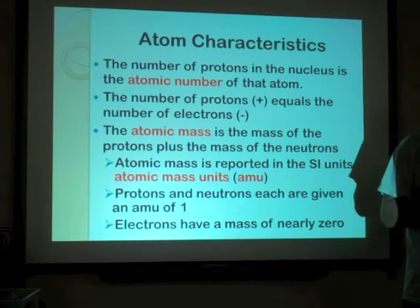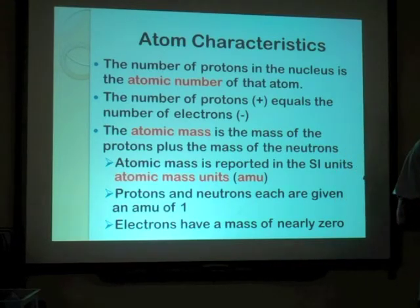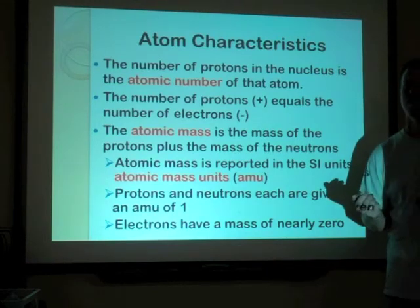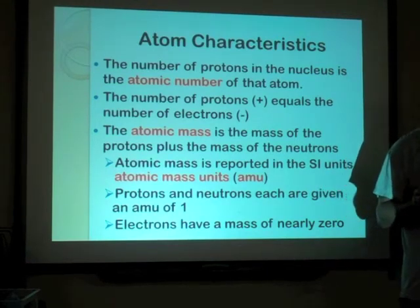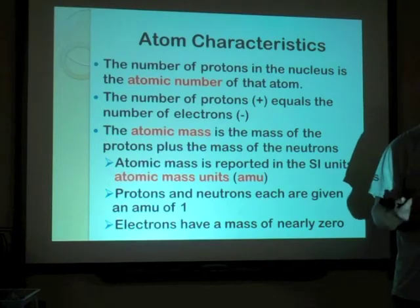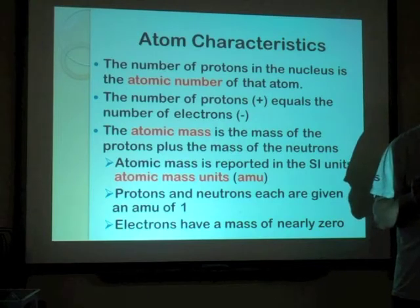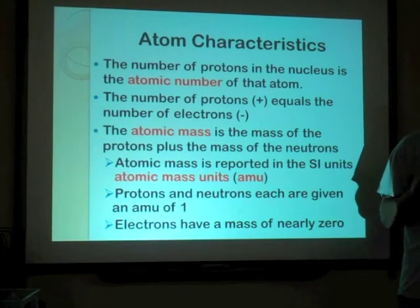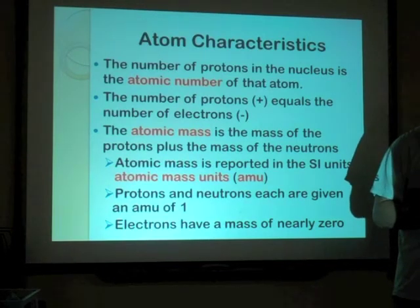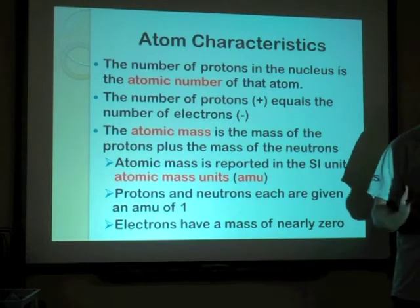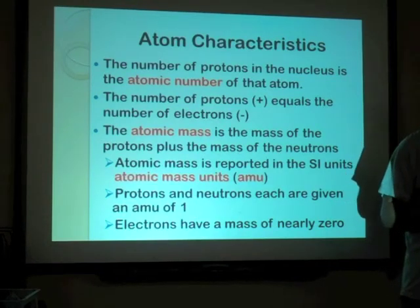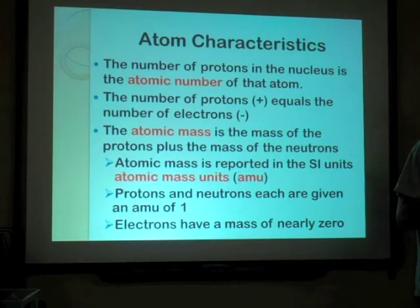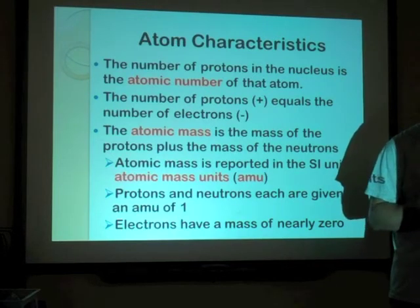Atomic mass is reported in the SI unit called the atomic mass unit, abbreviated AMU. This is like saying 20 grams — grams would be the unit, or 30 meters, or 50 milliliters. If we're talking about atomic mass, we put AMU. We can't use grams or any typical unit because atoms are so small they fall way below our typical unit of measurement. So we use AMU to represent the mass of atoms.